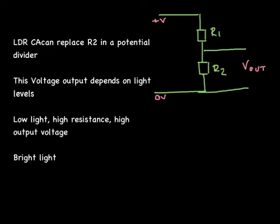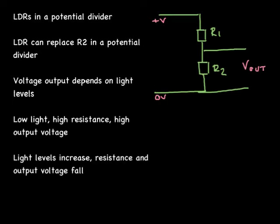LDRs can be placed in a potential divider circuit to provide such a switch. Last lesson we saw that in a potential divider we can use two resistors R1 and R2 to split a voltage and produce an output voltage. And we also discussed the idea of using a variable resistor for R2 so that we could change that output voltage in some way.